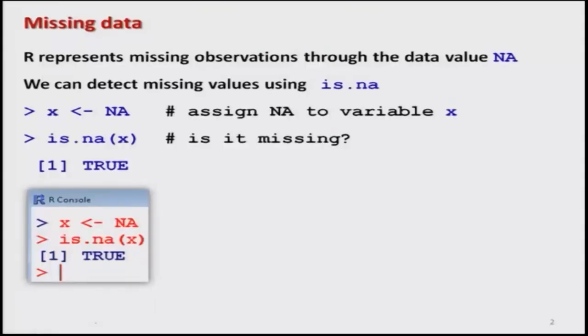The first question is: what is missing data? It is possible that suppose I have 5 values and one of the values is missing. I have 2 options — either I try to delete it and handle 4 data values, or the second option is that I declare that this value is missing. The advantage is that anybody handling that dataset will know that this particular value is not available.